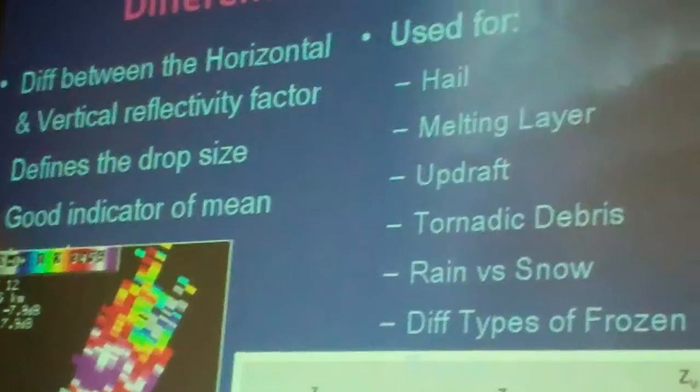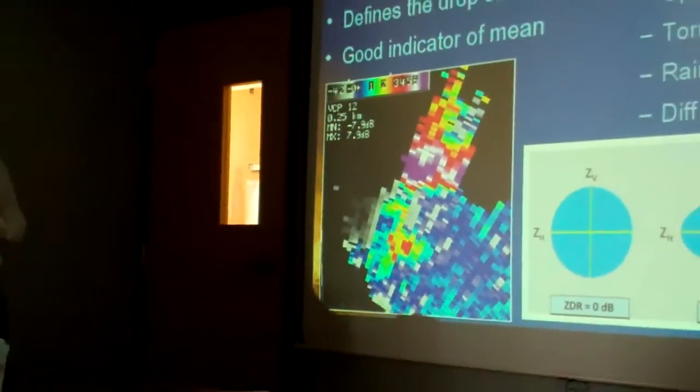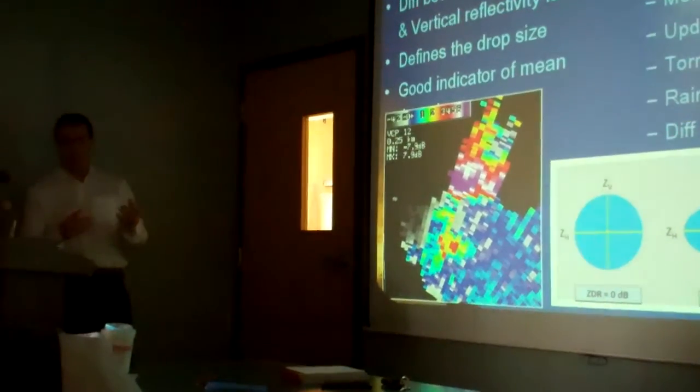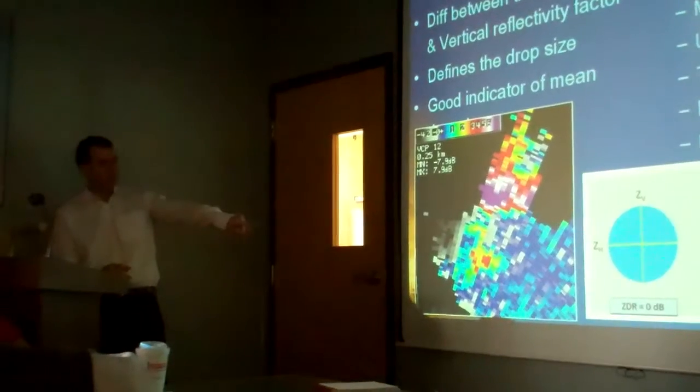So generally, if you see on the bottom right there, the ZDR is going to be close to zero when you're talking about something spherical. So something like hail, large hail, it's going to tend to be close to zero.